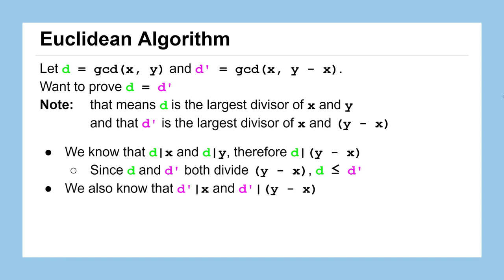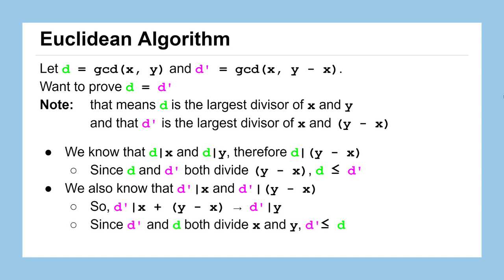Now let's apply the same logic to d prime. d prime divides x, and d prime divides y minus x. By adding x and y minus x together, we can figure out that d prime also divides y. So d prime divides both x and y — just like d does. But d is already the greatest common divisor of x and y, so d prime must be less than or equal to d.